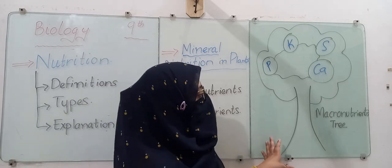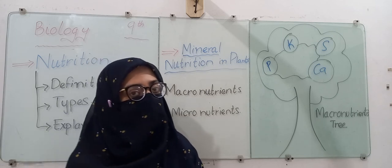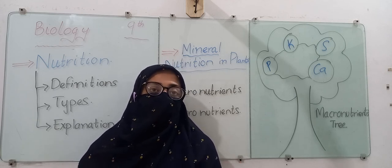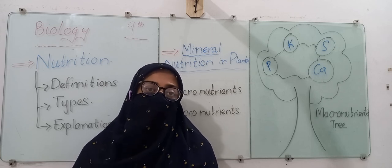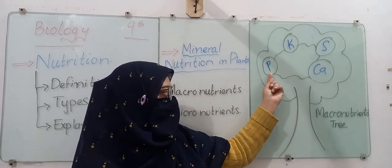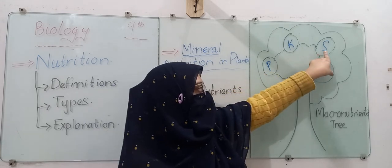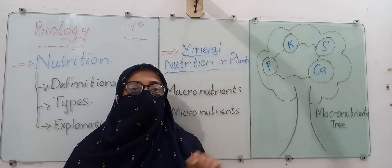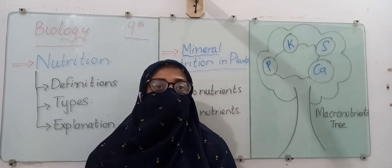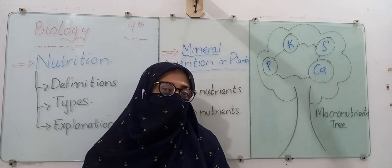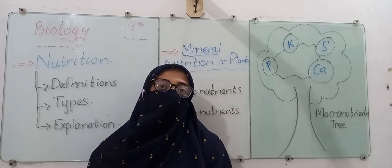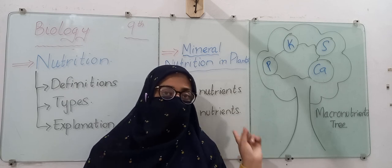I have shown a diagram about the macronutrients. We are going to discuss the macronutrients and micronutrients of plants in detail — the function or role of specific nutrients in a plant body. I have selected four different nutrients: phosphorus, potassium, sulfur, and calcium, shown by their element symbols in the diagram. In the next lecture we will study the details of all four nutrients and what happens if they are deficient or absent.